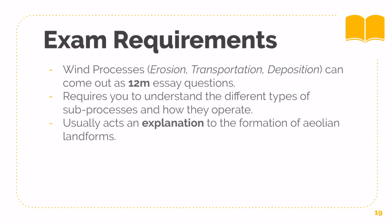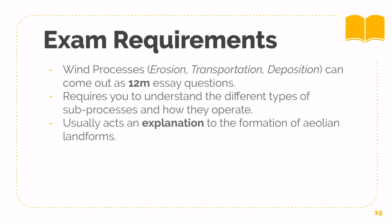So we've finally come to the end. What are the exam requirements? For this topic, you need to know the different wind processes of wind erosion, transportation, and deposition. You need to know all the sub-processes as well: your abrasion, deflation, saltation, suspension, accretion, encroachment — all the different types. It can usually come out as a possible 12-mark essay question. It requires you to understand the sub-processes, and it usually acts as an explanation for your later Aeolian landforms, which I'll link in the top right-hand corner.